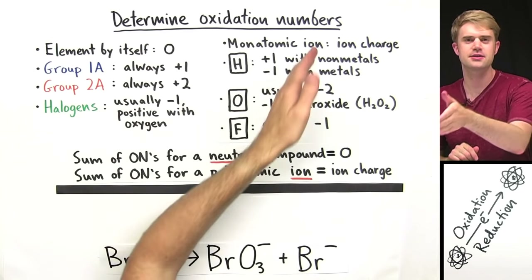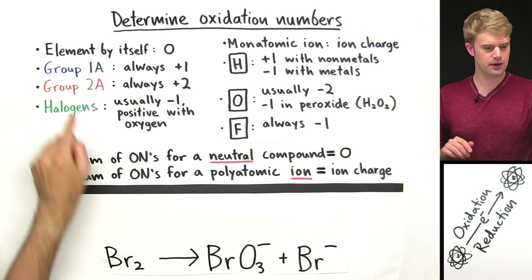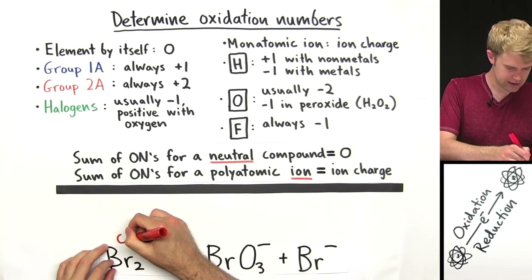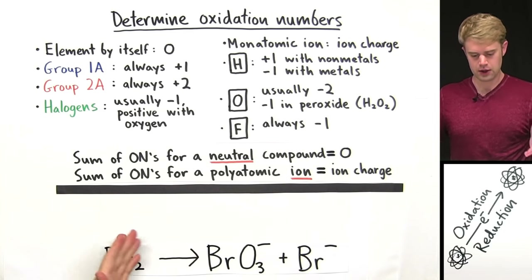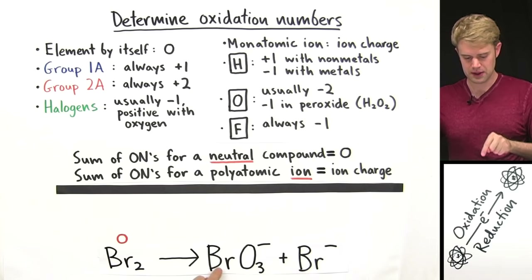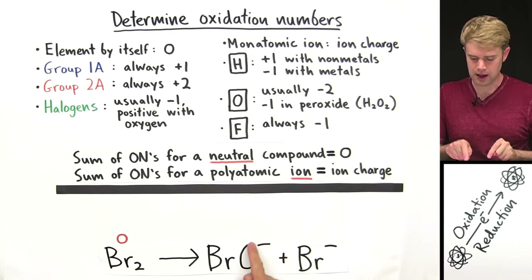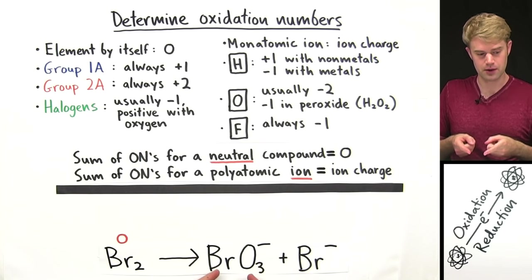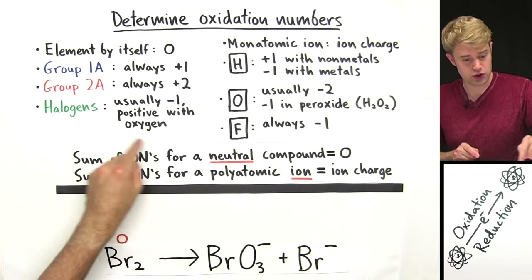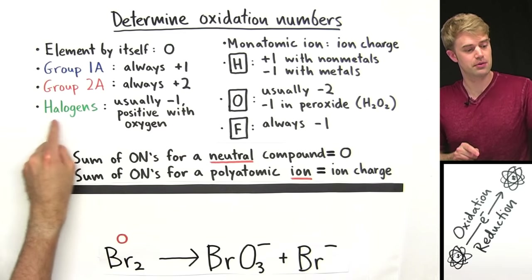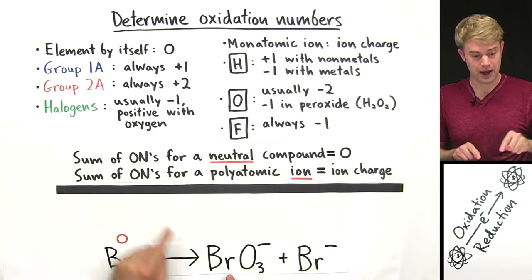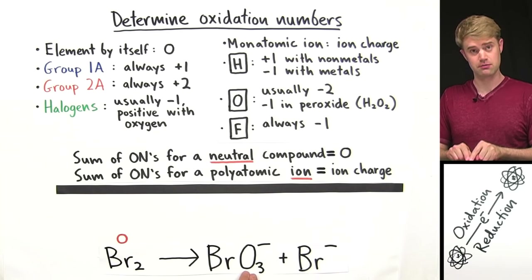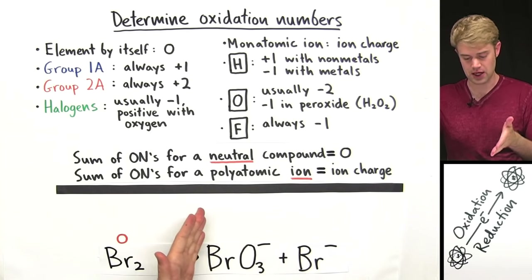Let's determine some oxidation numbers. Br₂ here is an element by itself — it's not combined with any other elements, so it has an oxidation number of zero. Now over on this side of the equation, Br combines with oxygen to make a polyatomic ion with a charge of one minus. In compounds with other elements, Br usually has an oxidation number of minus one because it's one of the halogens, but it's going to have a positive oxidation number with oxygen. So we'll have to figure out its oxidation number.